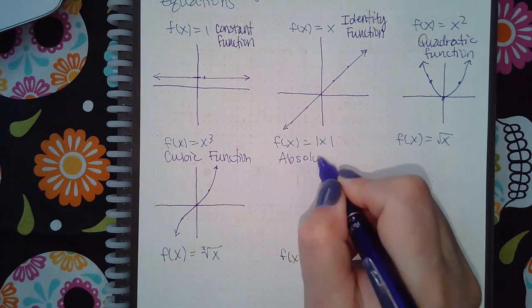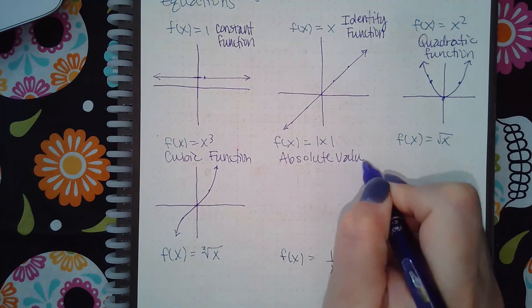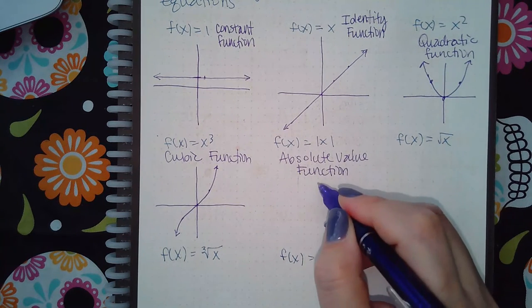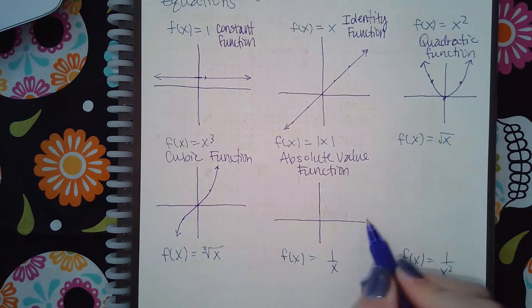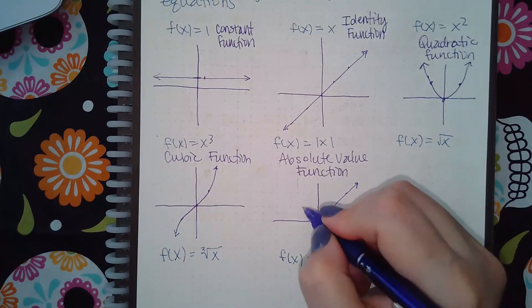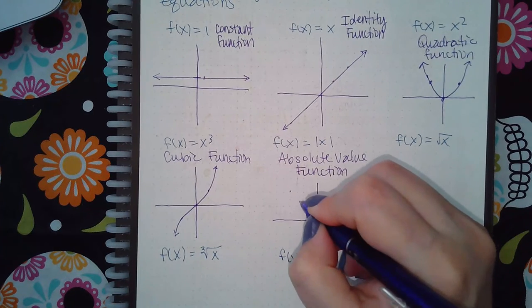Here we have the absolute value function. This one we've seen quite a bit. It kind of looks like a line on this side, but then the part of the line that would be going downward now goes upward.